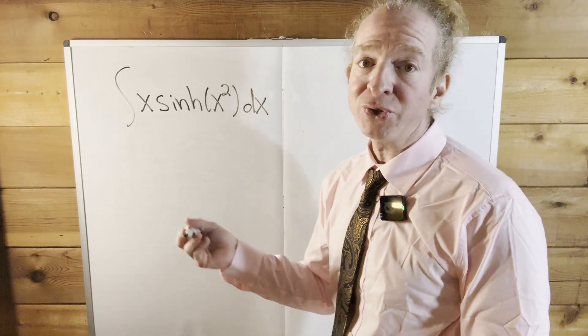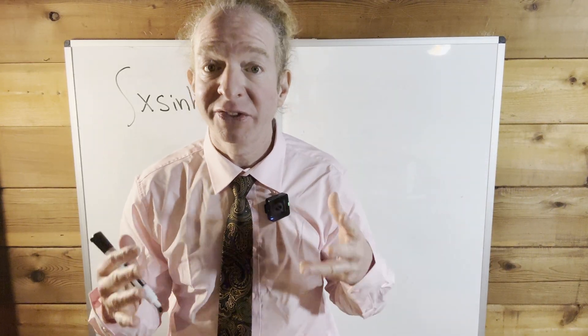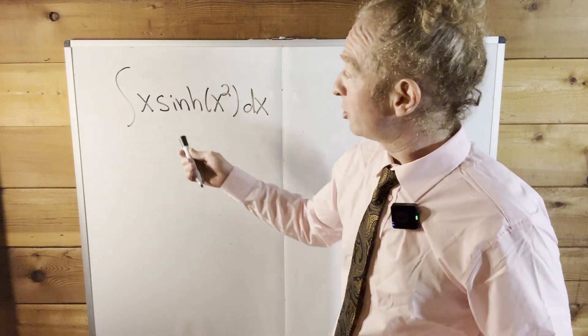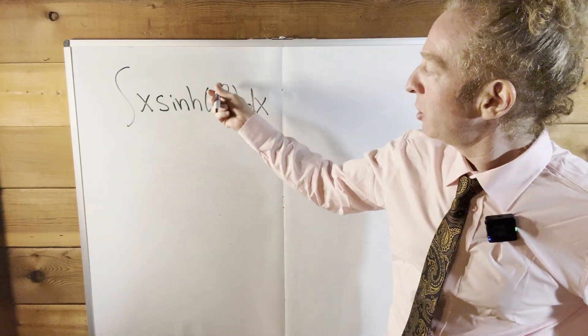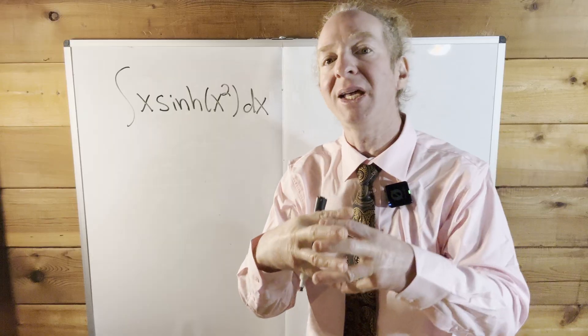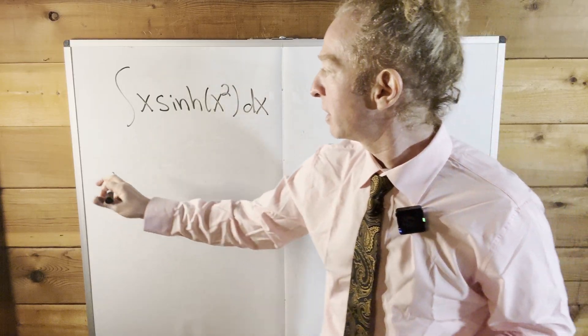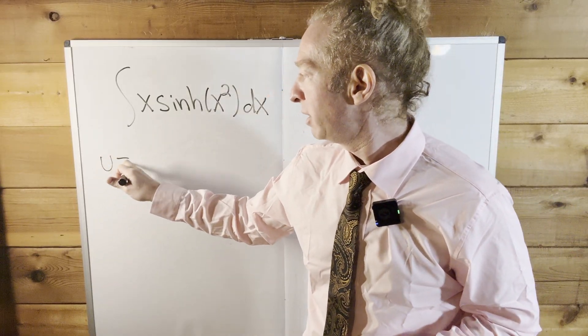sinh is also known as the hyperbolic sine function. To do this problem, we're going to start by doing a u substitution. We're going to let u be what's inside the sinh function, so I'm going to let u equal x squared.